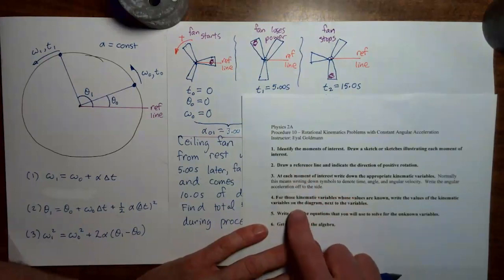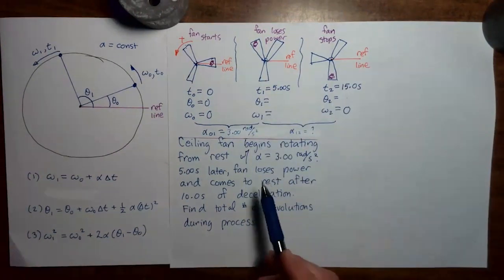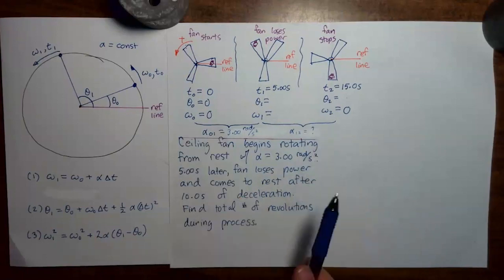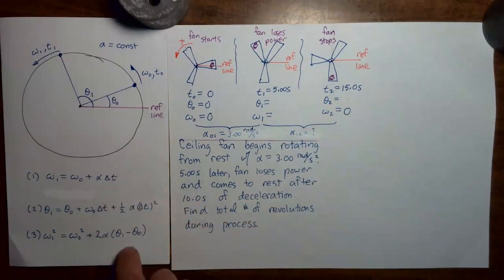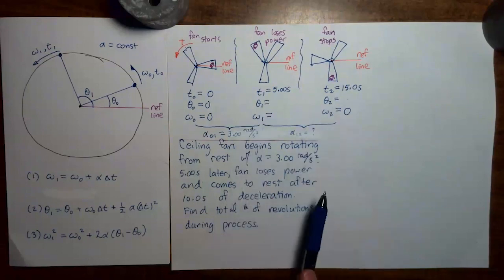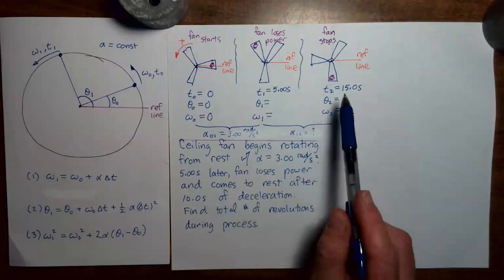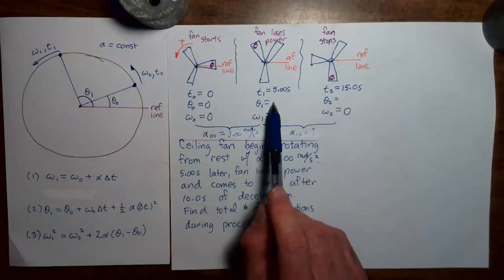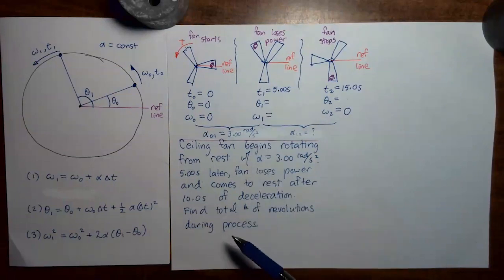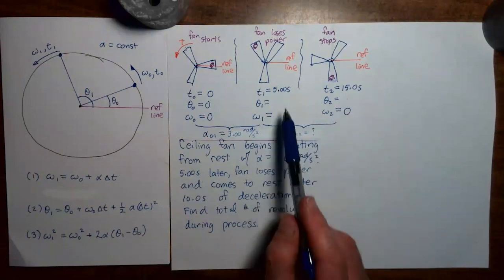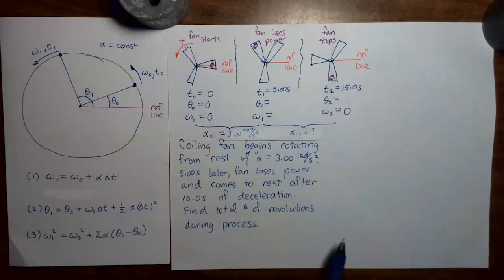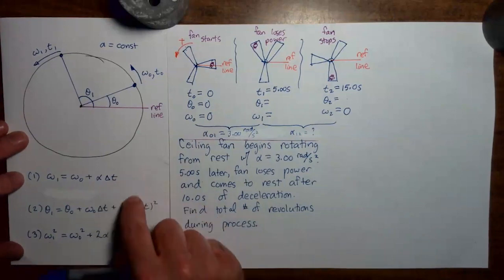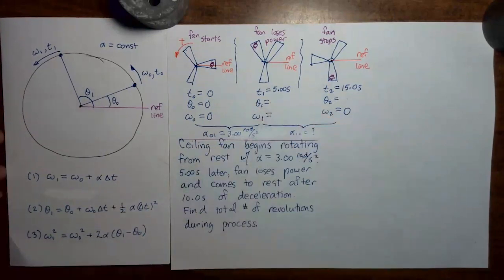Now at step five, we figure out which equations we need to solve the problem. The problem asks for the total number of revolutions — in other words, we need to solve for theta two. To solve for theta two, we connect moment one to moment two, but every equation with theta two also has theta one, which is currently unknown. So before we can get theta two, we first need to get theta one, and while we're at it, omega one as well.